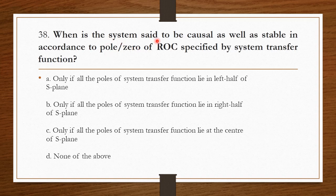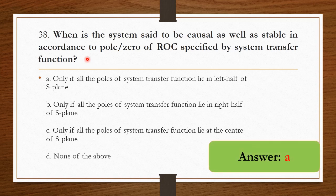When is the system said to be causal as well as stable in accordance with the poles and ROC specified by the system transfer function? Only if all the poles of the system transfer function lie in the left half of the S-plane — this is a very important condition. So option A is the right answer.